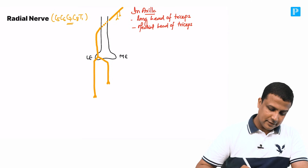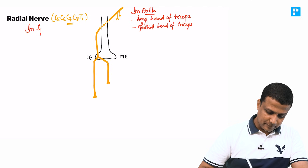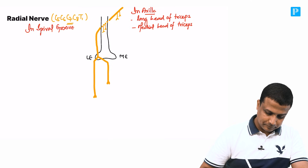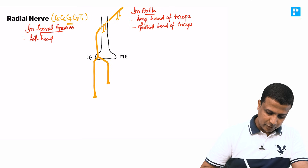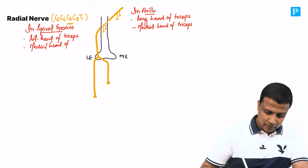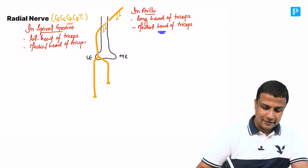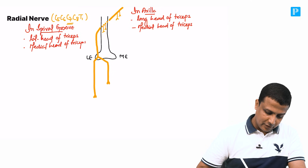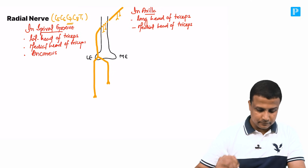The next landmark is the spiral groove. In the spiral groove, it supplies the lateral head of triceps and the remaining part of the medial head of triceps. The remaining medial head of triceps is supplied in the spiral groove, and from here it also supplies the anconeus muscle.